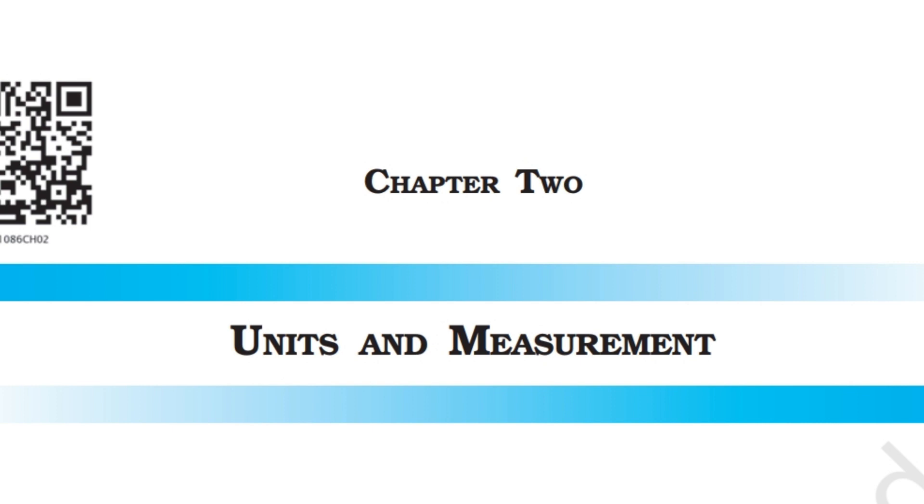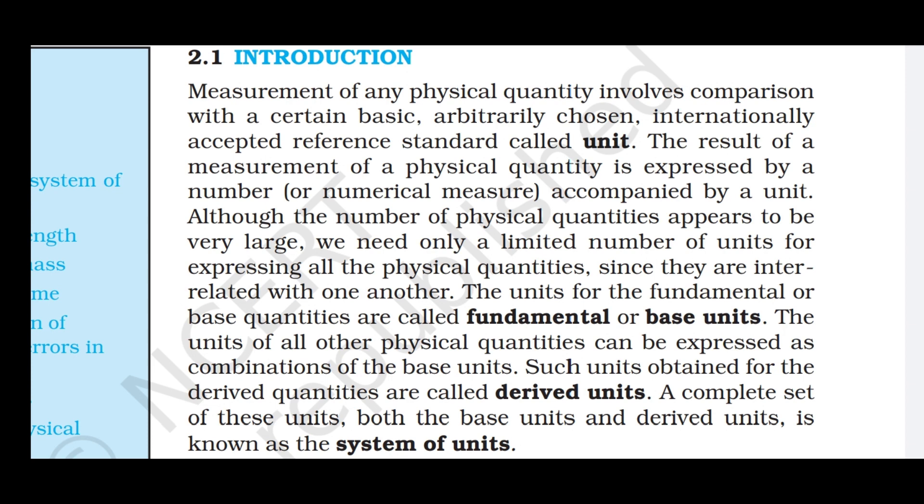Physics Textbook of Class 11th Part 1, Chapter 2: Units and Measurement, narrated by Isna Rafat Khan. Introduction: Measurement of any physical quantity involves comparison with a certain basic, arbitrarily chosen, internationally accepted reference standard called a unit. The result of a measurement of a physical quantity is expressed by a number accompanied by a unit. Although the number of physical quantities appears to be very large, we need only a limited number of units for expressing all the physical quantities, since they are interrelated with one another.